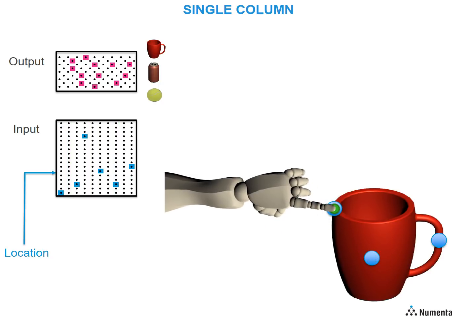Now it touches the second location. The input layer receives the next location signal and the next sensory input. That combination gets sent to the output layer. The output layer learns by integrating input over time. So after this second touch, the output layer integrates its previous representation with the current input, and knows that it can't be the ball. Notice the output representation is becoming smaller — now it's a union of the input from the two touches. As a result, it represents only two possible objects.